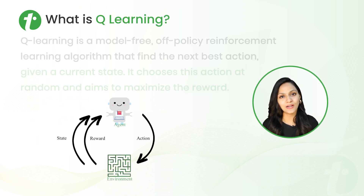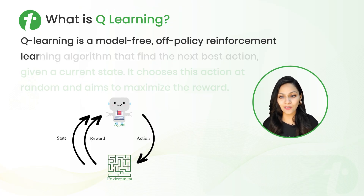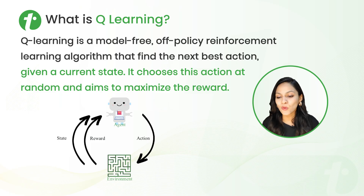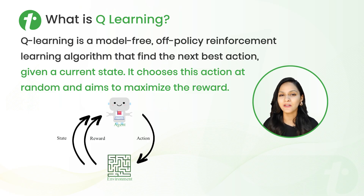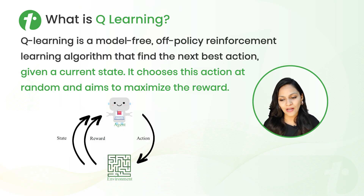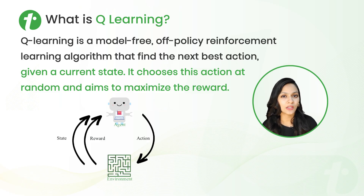Q-learning is a model-free off-policy reinforcement learning algorithm that finds the next best action given a current state. It chooses this action at random and aims to maximize the reward. Here you can see this standard reinforcement learning graph. Where you have an agent, the agent takes some action, the action affects the environment, and then the environment sends back the feedback or the reward.